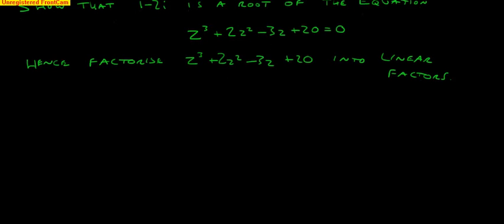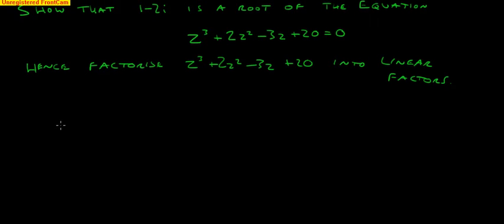So let's put the numbers in and see what happens. So we're going to get 1 minus 2i cubed plus 2 into 1 minus 2i squared minus 3 into 1 minus 2i plus 20.